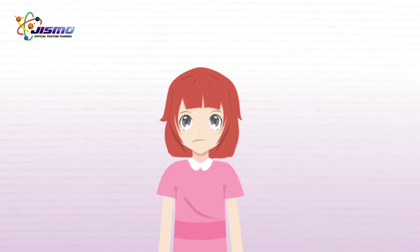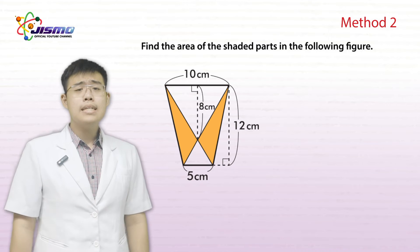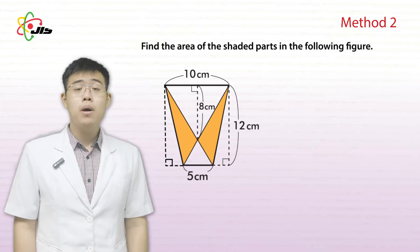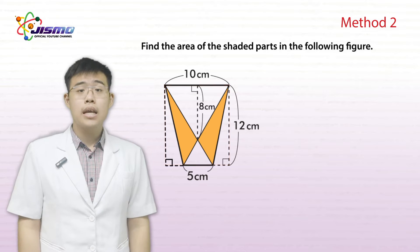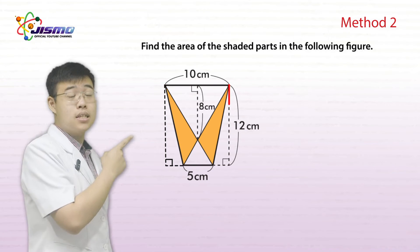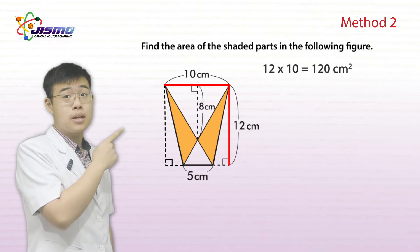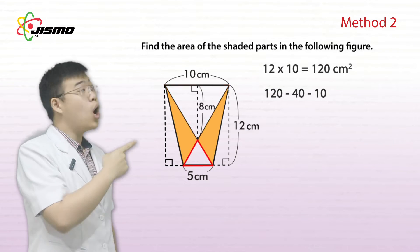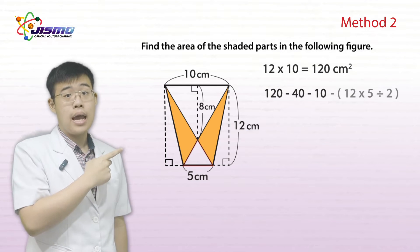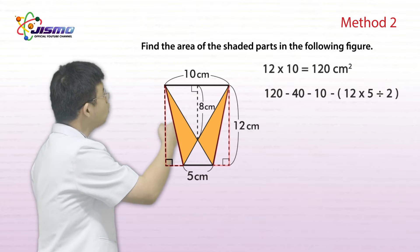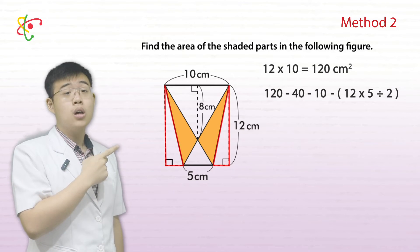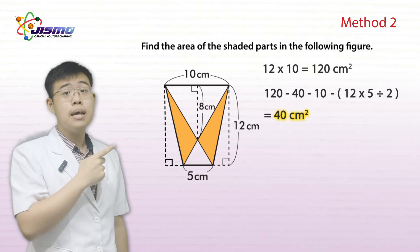Mooji Sensei! What if I do not know or forget the formula of the trapezoid? What do I do? Okay, Momo, there is another way. I will draw dotted lines and form what we call a rectangle. This rectangle will be our total area, which is 12 × 10 = 120 square centimeters, minus the area of the big triangle (40 sq cm), minus the area of the smaller triangle (10 sq cm), and then minus the area of the two dotted line triangles, which is 12 × 5 ÷ 2 = 30 square centimeters. So our result is 40 square centimeters, which is the same as Jimin's.